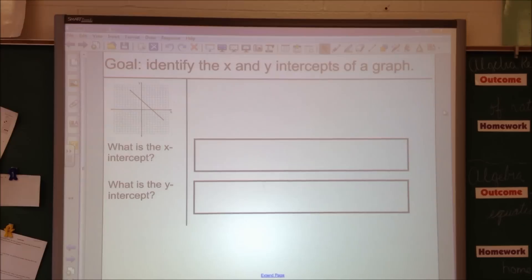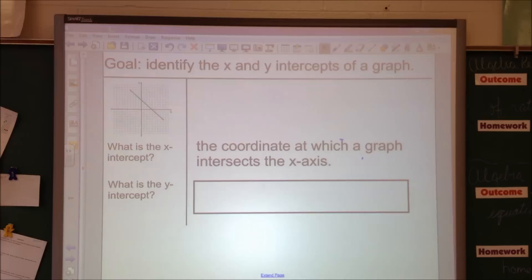Today, we will be identifying the x and y intercepts of a graph. I know I'm doing the best I can with the voice I have, guys. When we look at a graph, we see we have the y-axis and we have the x-axis. The x-intercept is simply what it says: it is the coordinate at which a graph intersects the x-axis.